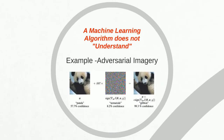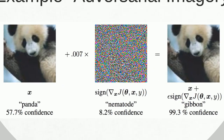Here's an example of why a machine learning algorithm does not understand, and that example is adversarial imagery. This is a deep neural network being used for image classification. On the left, we have a panda, which it classifies with fairly good confidence. However, if we perturb the pixel intensities by a very slight amount — in this case 0.007% in what seems like a random direction — we trick the machine learning algorithm into classifying this image as something entirely different. In this case, it thinks it's a gibbon on the right with 99.3% confidence.